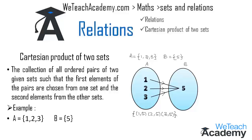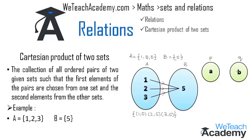We have two Venn diagrams — let us represent the first as P and the second as Q, and now map A with B. We can denote the Cartesian product of any two sets as P×Q, and write this in set-builder form as {(a,b) such that a belongs to P and b belongs to Q}.